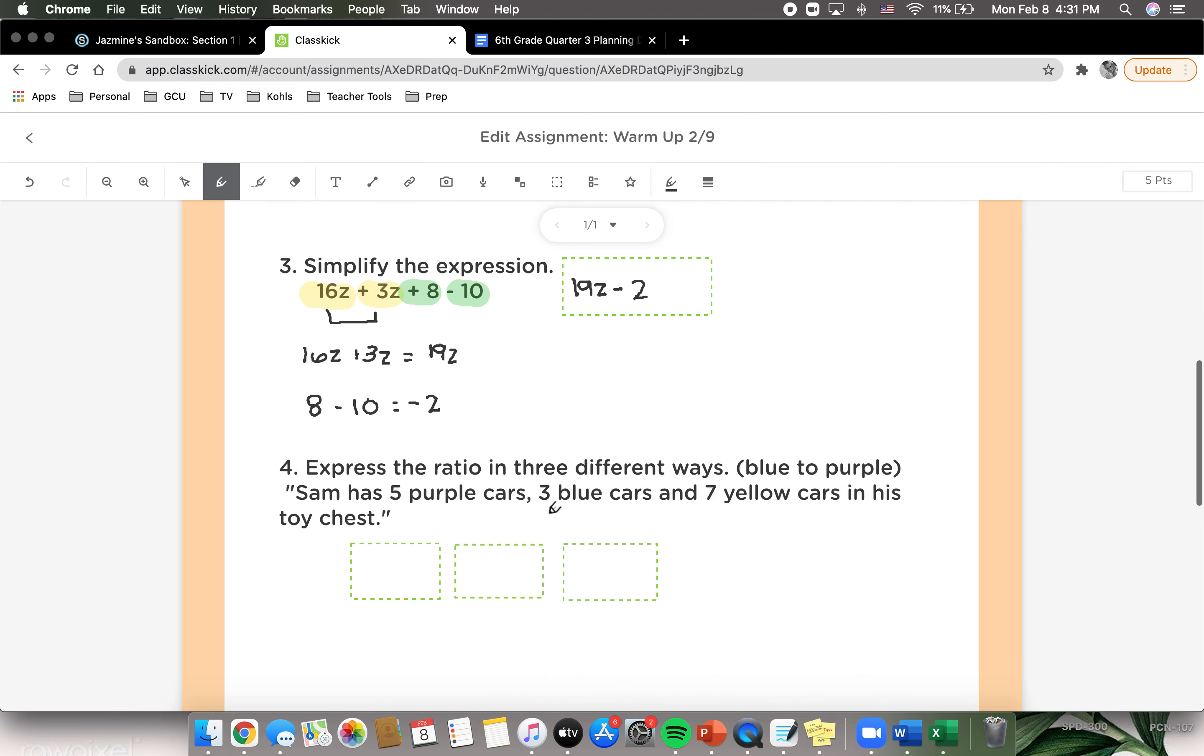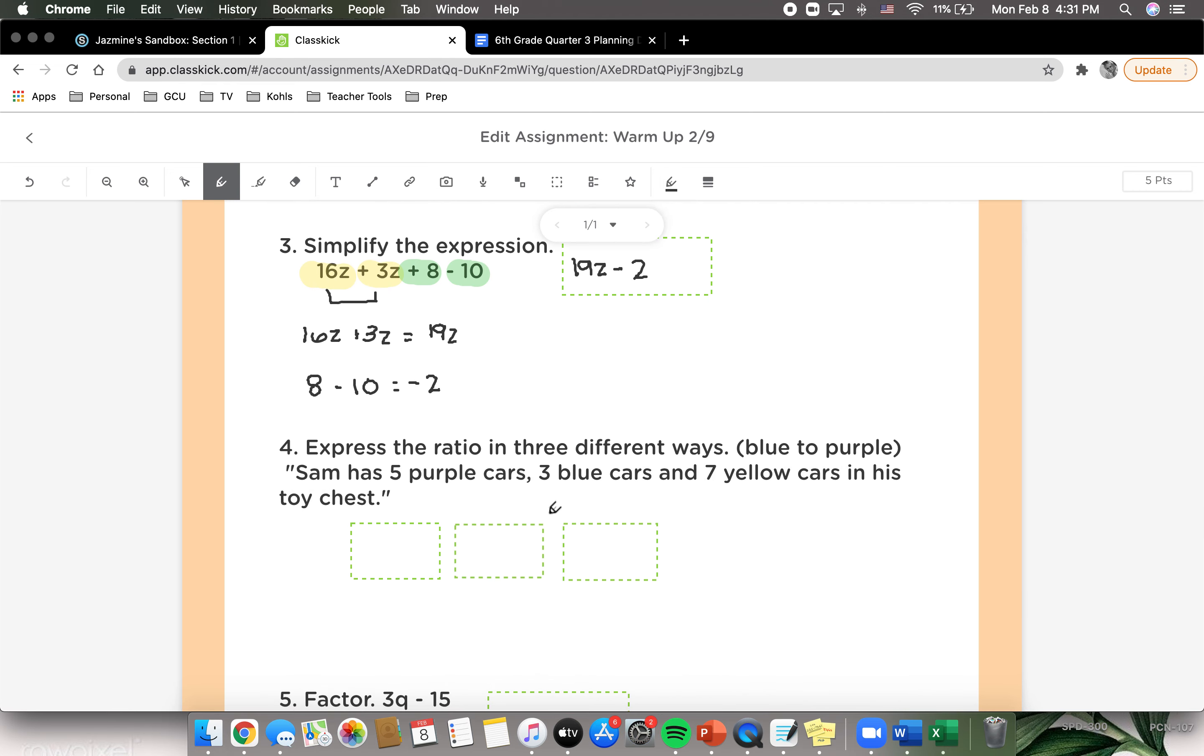Looking at number 4, it says express the ratio in 3 different ways, blue to purple. Sam has 5 purple cars, 3 blue cars, and 7 yellow cars in his toy chest. So we're trying to find the blue to purple. So we know he has 5 purple cars and 3 blue cars.